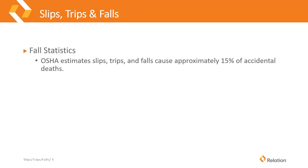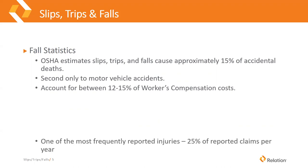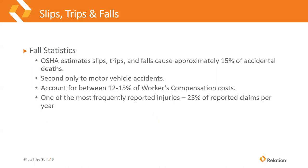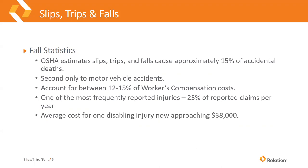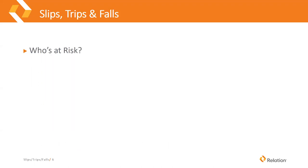Some statistics on falls: OSHA estimates that slips, trips, and falls cause approximately 15% of accidental deaths — second only to motor vehicle accidents. They also account for between 12 to 15% of workers' compensation costs. About 25% of reported claims per year are from slips, trips, and falls. The average cost for one disabling injury is now getting upwards of around $38,000, and over 70% of all disabling occupational injuries result from falls.